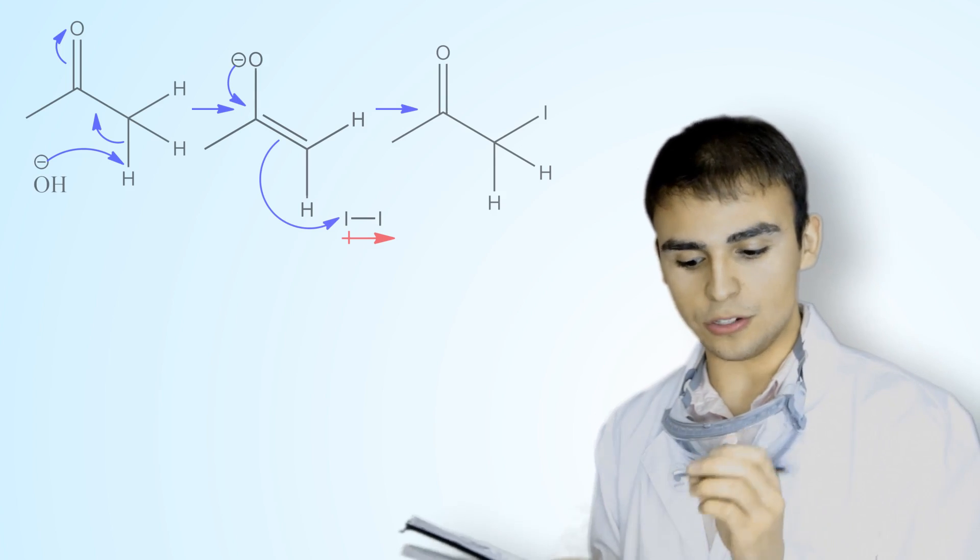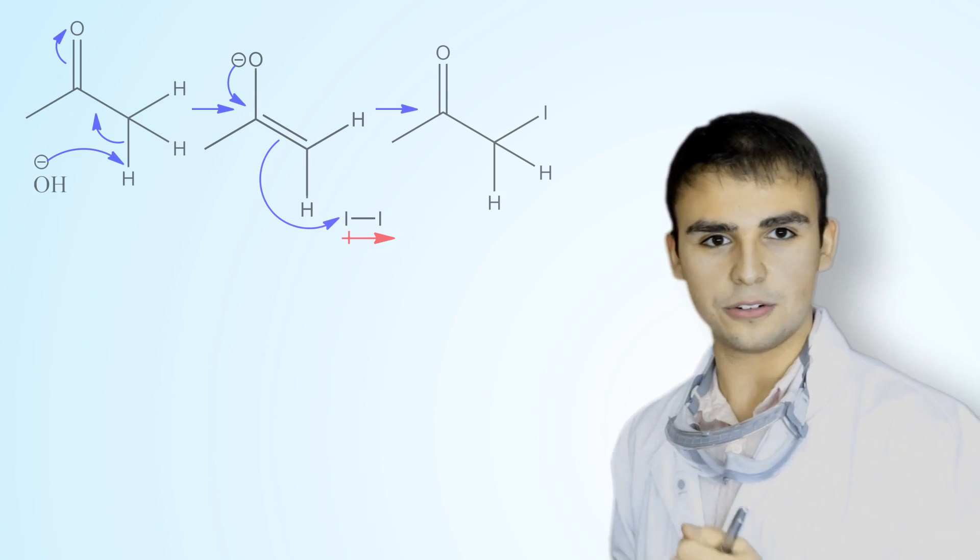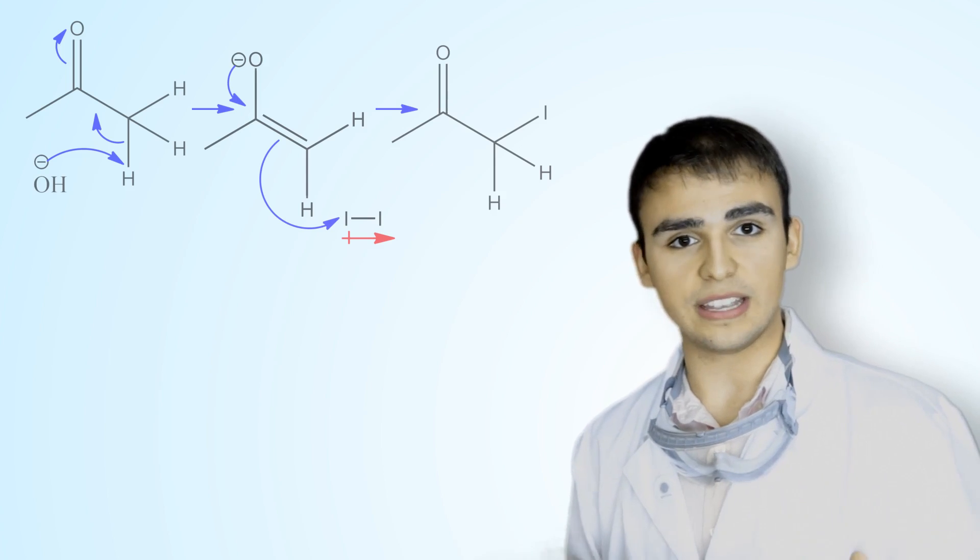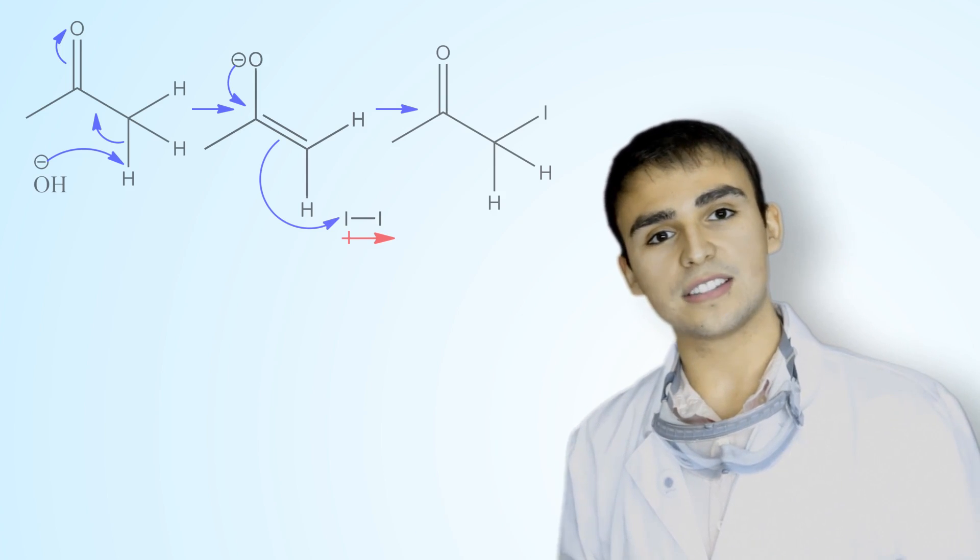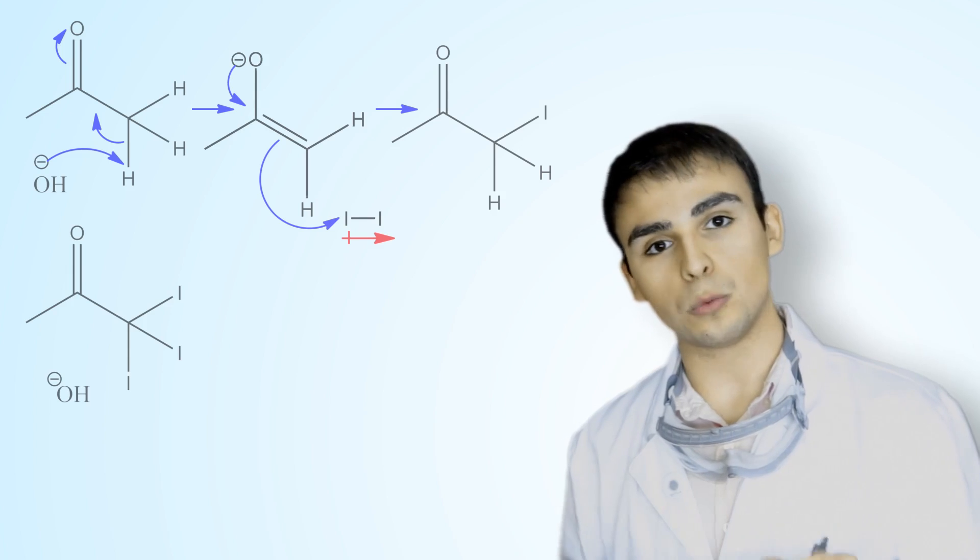So that nucleophilic hydroxide anion is going to be drawn even more powerfully to those alpha hydrogens. After the exhaustive halogenation is completed, it will yield us the acetone molecule with three iodo substituents on one of the alpha ends.